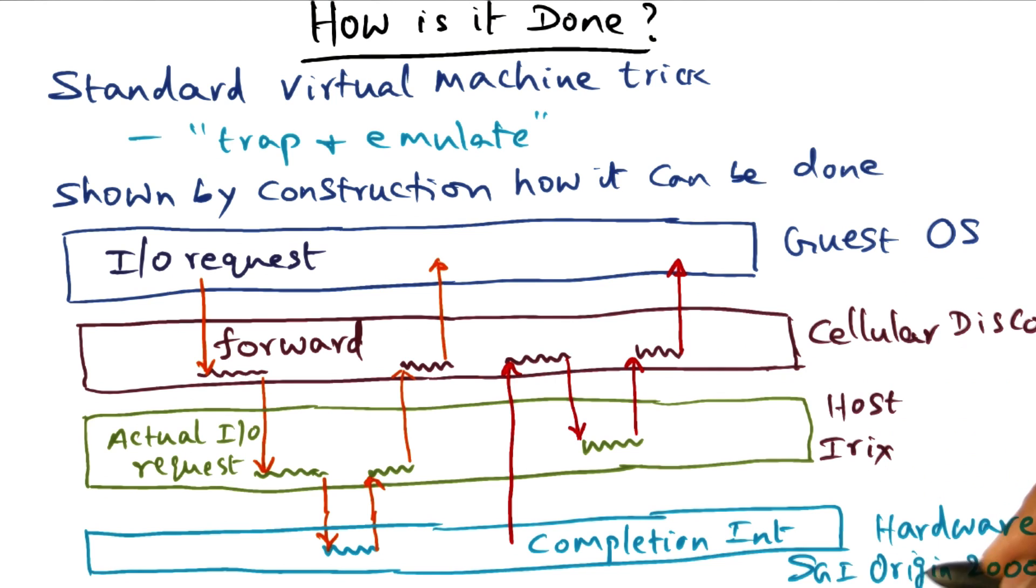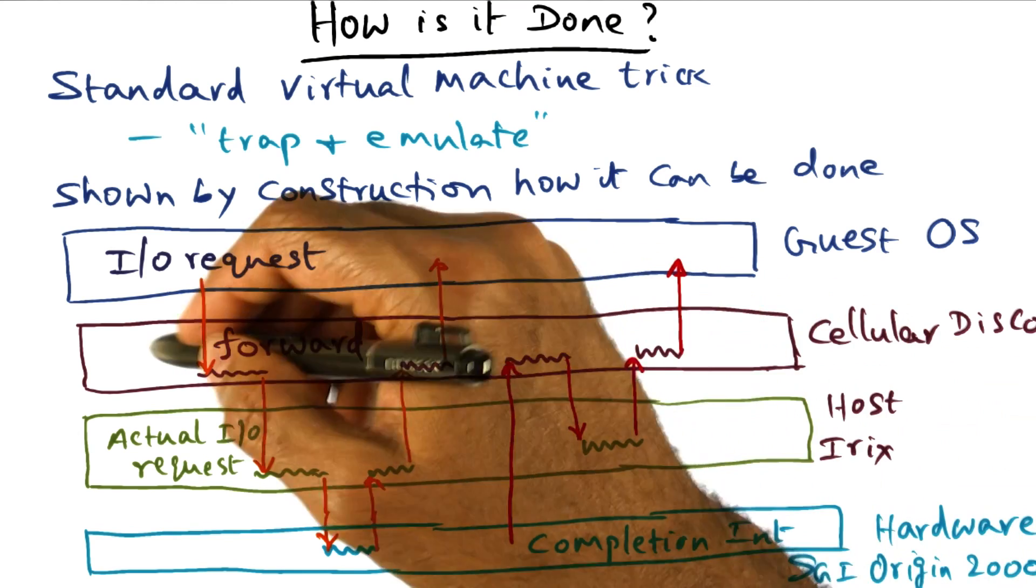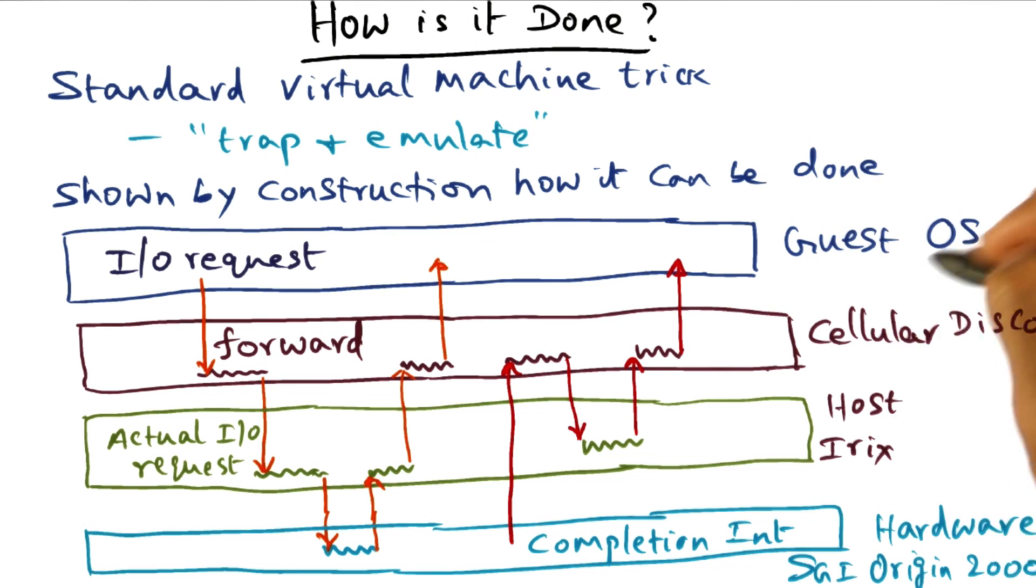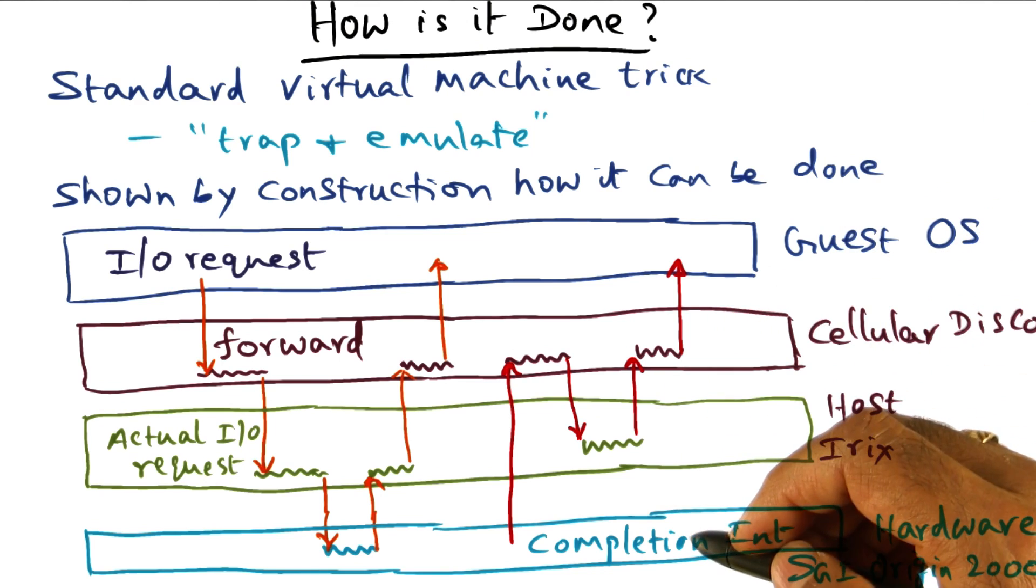This particular thought experiment was conducted on a machine called the Origin 2000 from SGI, a 32-node machine—a shared memory multiprocessor. The operating system is a flavor of Unix operating system called Irix, the host operating system running on top of the Origin 2000. The VMM layer, Cellular Disco, sits in between the guest operating system and the host operating system.